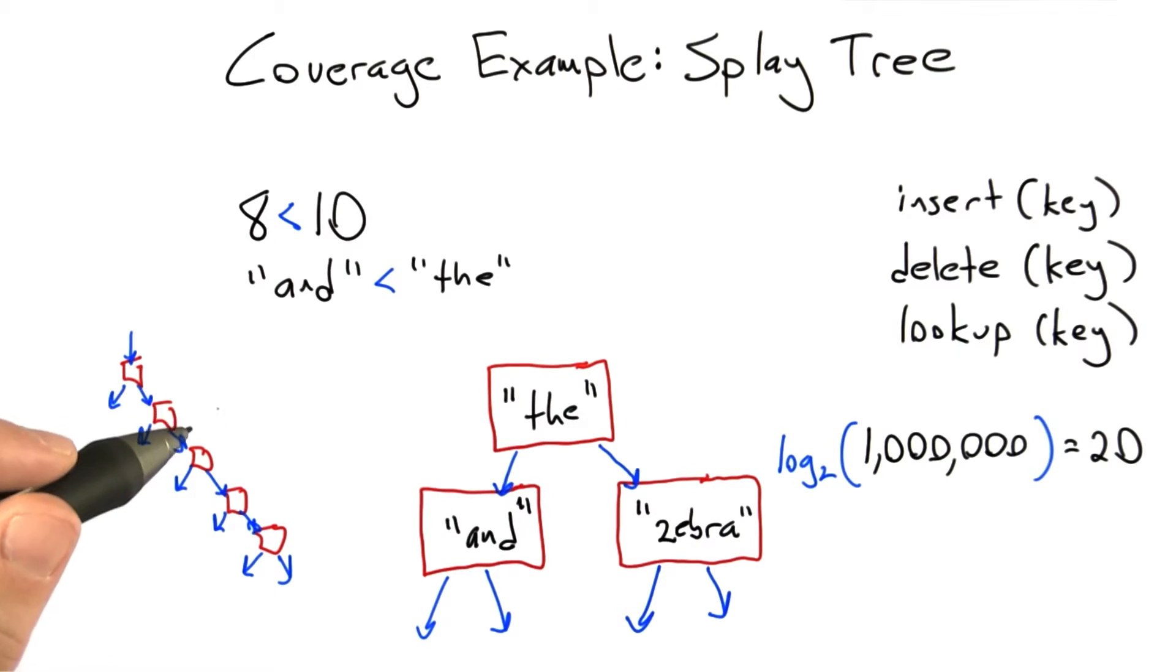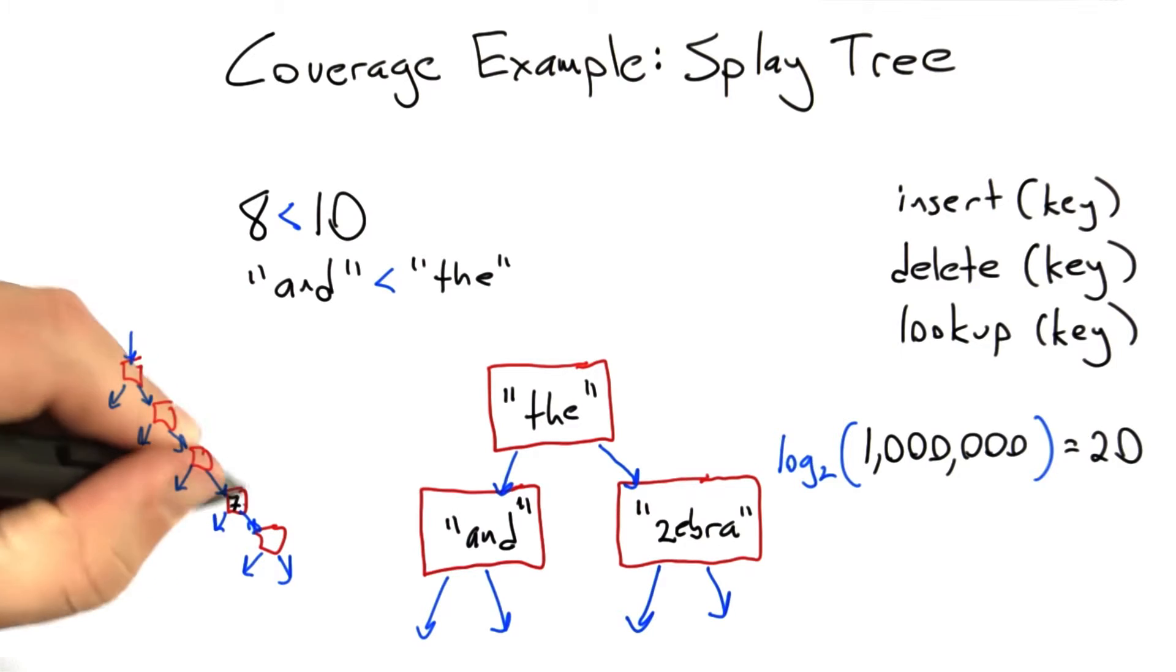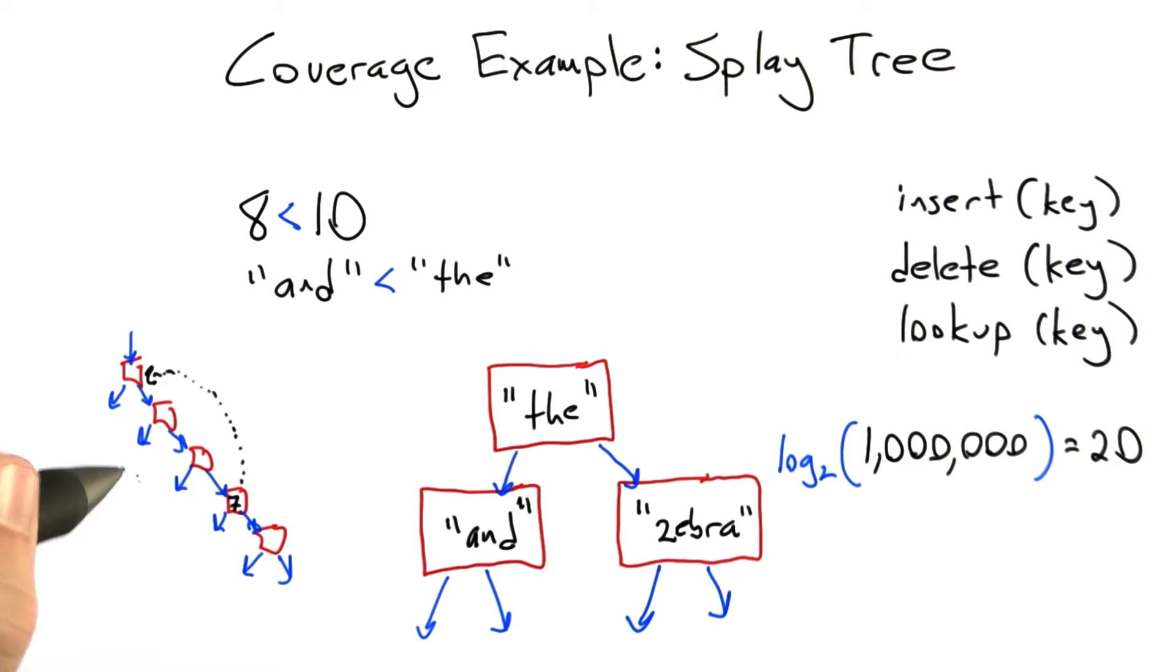So the other thing you need to know about splay trees before we even get into the code is it has the really cool property that when we access a node, so let's say we do a lookup of this node here, which contains 7, what's going to happen is as a side effect of the lookup, that node is going to get migrated up to the root. And then whatever was previously at the root is going to be pushed down and possibly some sort of a balancing operation is going to happen.